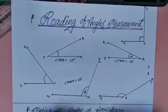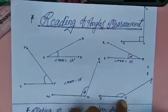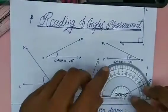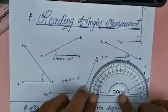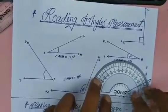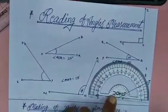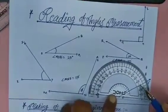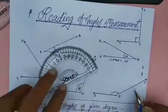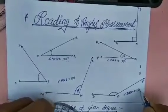Now for angle DEF, the baseline is DE and the angle point is E. Place the midpoint of the protractor on point E and cover baseline ED. Ray EF falls on 30 and 150. It is an obtuse angle, so we take 150 degrees, not 30 degrees. Therefore, angle DEF equals 150 degrees.